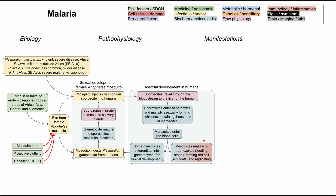A couple of factors modify the asexual development pathway in humans. First is the Duffy antigen — an antigen on red blood cells that merozoites use to enter them. People with altered or absent Duffy antigens have some innate resistance to malaria, since the merozoites cannot enter the red blood cell. Similarly, being a carrier of the sickle cell mutation can prevent merozoites from maturing into trophozoites and replicating in red blood cells. This is thought to be why the sickle cell mutation is more common in people of African descent.